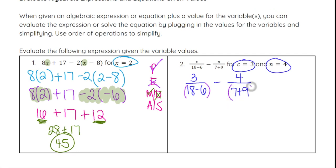This has to be done before we can do any dividing. So I'm going to leave it 3 over (18 minus 6). When you do 18 minus 6, you get 12. And then minus 4 over (7 plus 9) is 16.